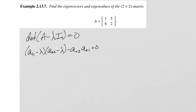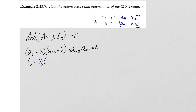That's on your formula reference card if you know where to look. Now we're going to substitute our values in. This A matrix has entries a₁₁, a₁₂, a₂₁, and a₂₂. Substituting our values in, that gives us (1 minus lambda)(2 minus lambda) minus 5 times 6, and that equals 0.